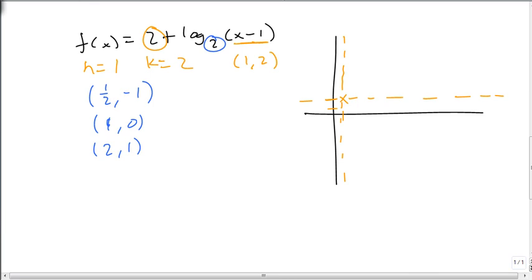So that we can go over 1, over 2 and up 1, and over a half and down 1. And we take that same graph that we just drew and we move it 1 to the right and up 2 because of the transformation that takes place.